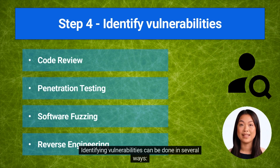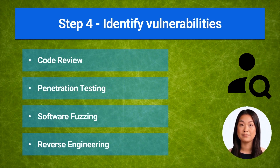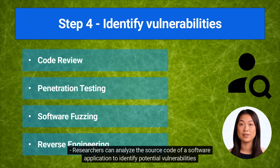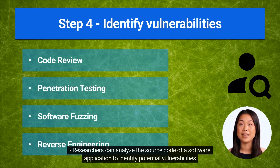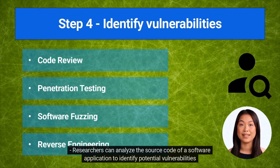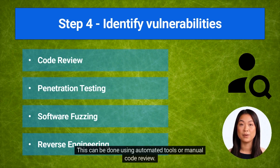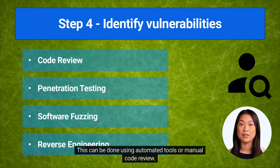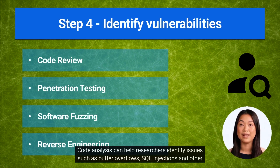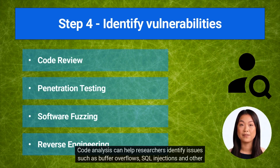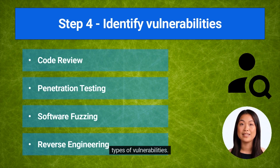Identifying vulnerabilities can be done in several ways. Researchers can analyze the source code of a software application to identify potential vulnerabilities and security issues. This can be done using automated tools or manual code review. Code analysis can help researchers identify issues such as buffer overflows, SQL injections, and other types of vulnerabilities.